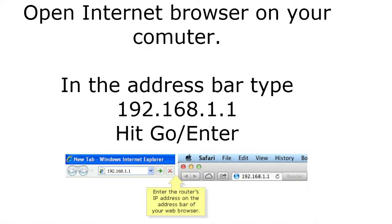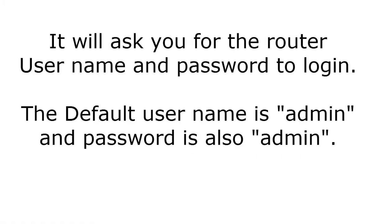On your main computer, open the internet browser — it could be Firefox, Internet Explorer, Chrome, or Safari. In the address bar, type 192.168.1.1 and hit Enter. This is the default IP address of your Linksys WRT1200 AC router. Once you hit Enter, it will ask you for a username and password. The default username is admin and the default password is also admin.